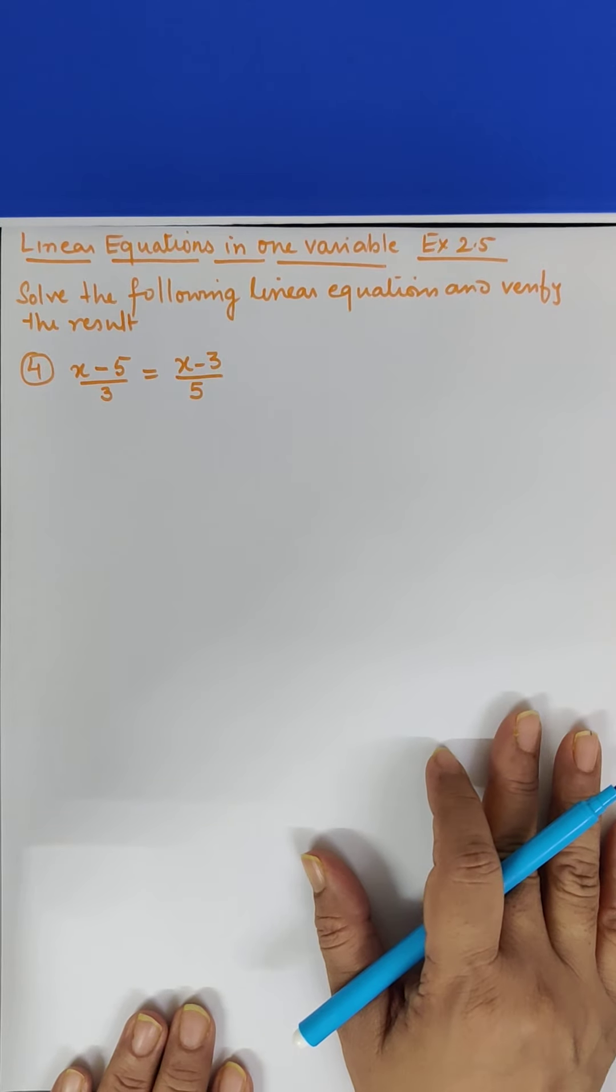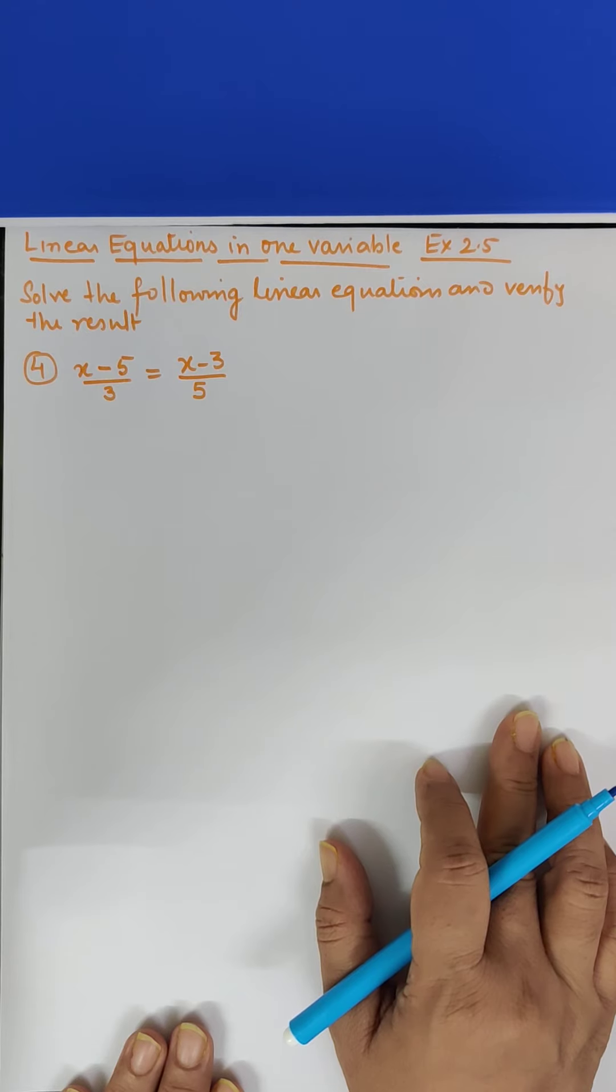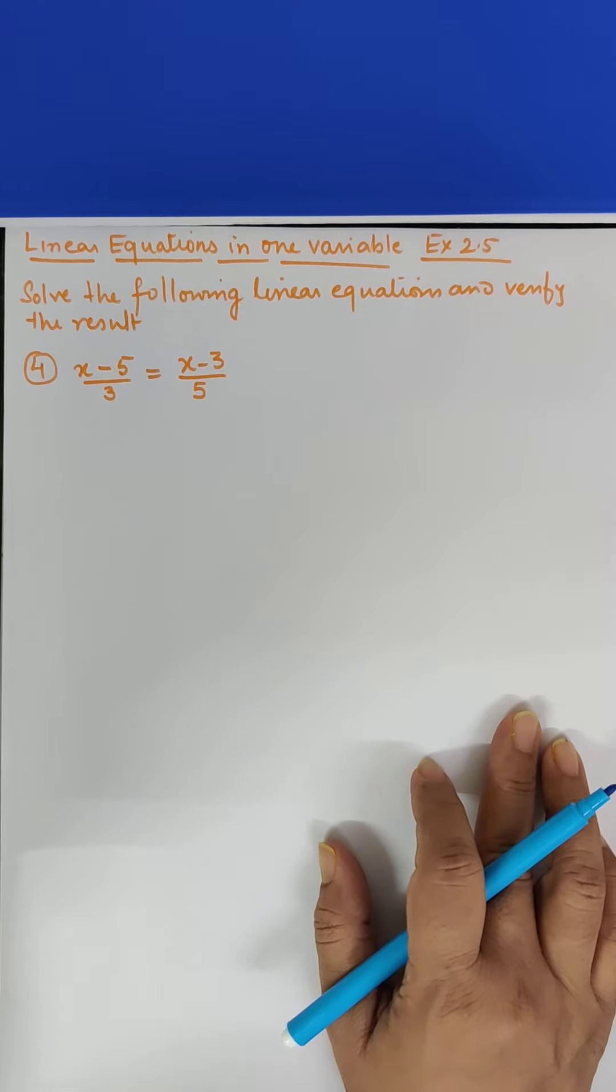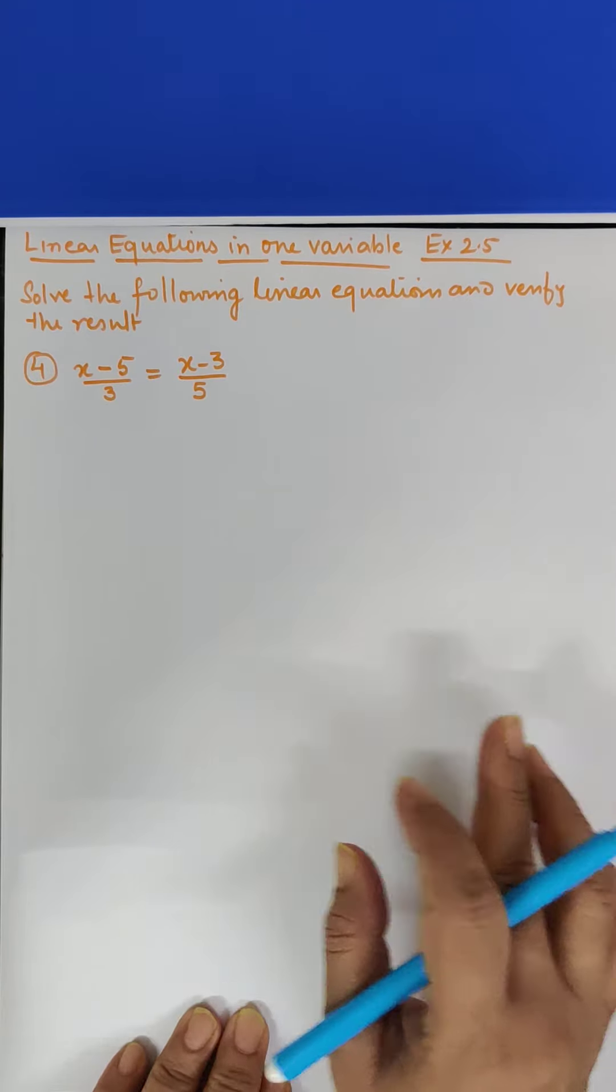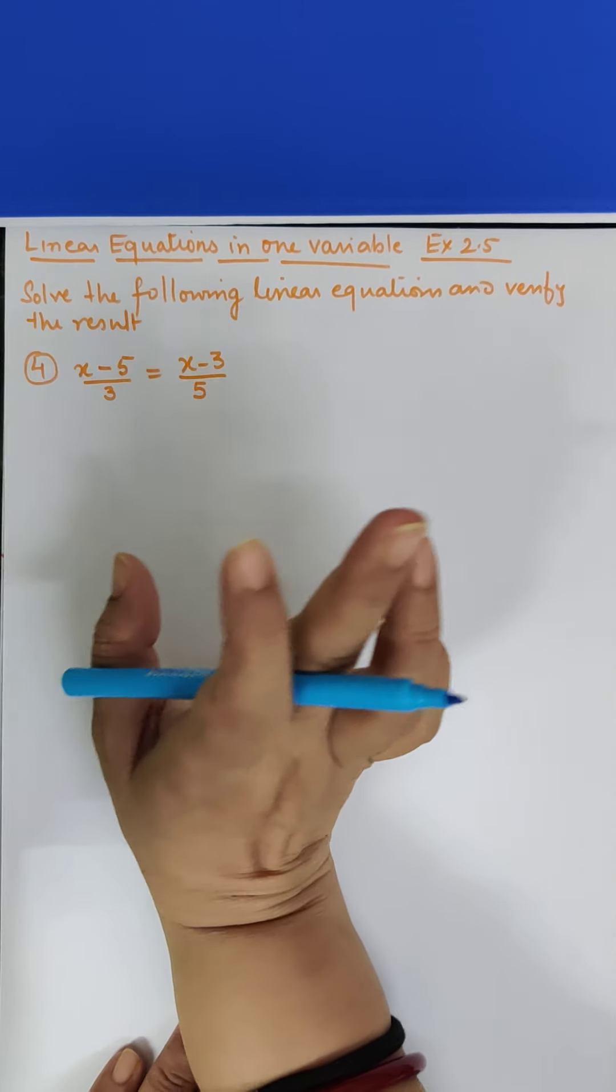Yes children, in today's class let us start with question number 4 of exercise 2.5. The topic is linear equations in one variable. The question is solve the following linear equation and verify the result. The question is x-5 upon 3 is equal to x-3 upon 5.